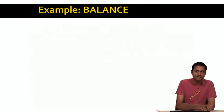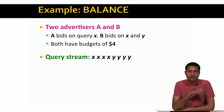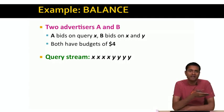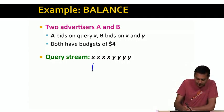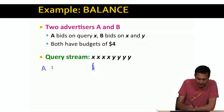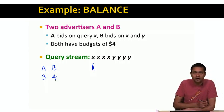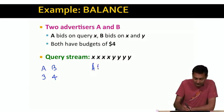Let's look at how the balance algorithm deals with the example we just saw. There are two advertisers A and B. A bids on query X, and B bids on queries X and Y, both with budgets of $4. When the first query X comes in, both A and B are eligible and both have an equal balance of four. The balance algorithm breaks this tie arbitrarily — let's say it assigns the first query to A. When the second X comes in, A's balance is now three and B's balance is four. So the algorithm assigns the second X to B, the advertiser with the largest balance.